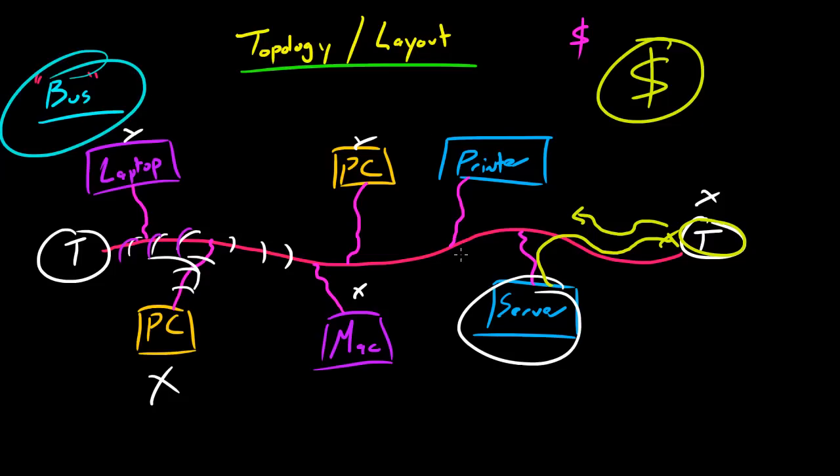One of the drawbacks from a bus topology is that it can break very easy. For example, if this terminator right here breaks, then pretty much you're going to have a lot of mirroring and your electric signals are going to confuse all of your devices.